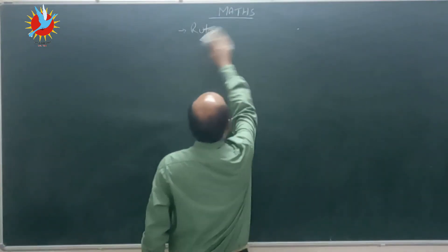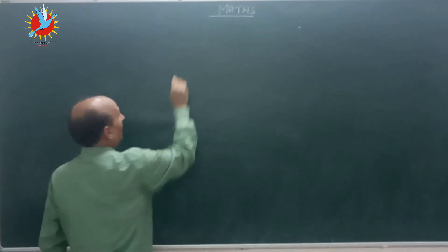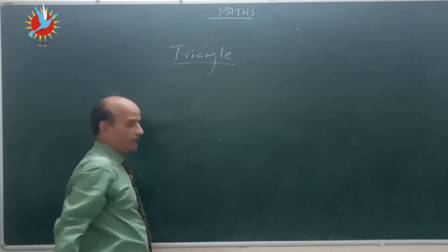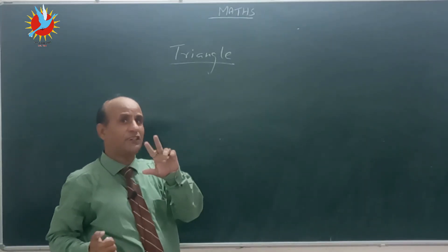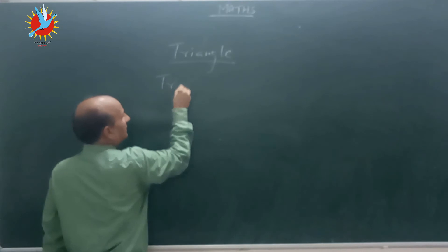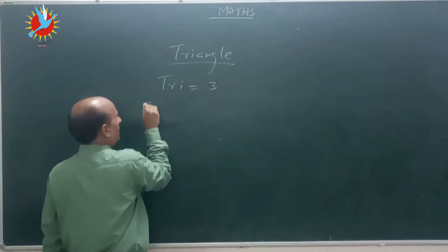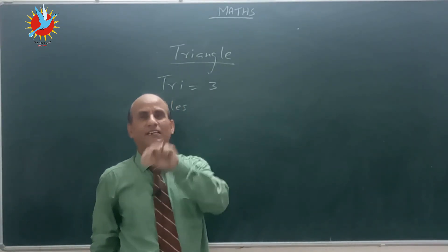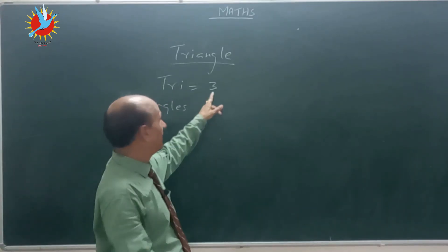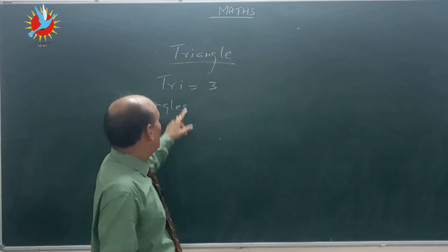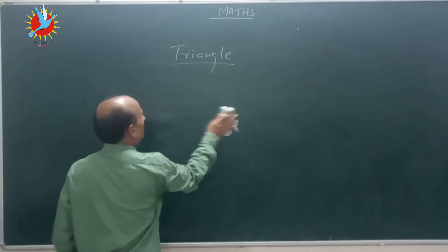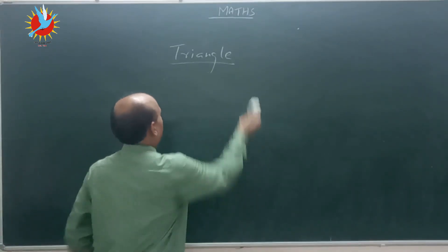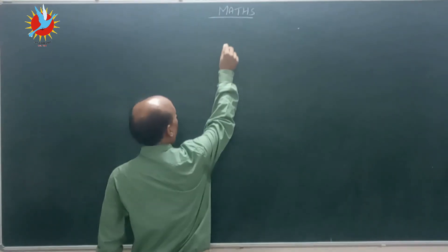Now let us take one new property of a triangle. The word 'triangle' is a combination of two words: 'tri,' which is a Greek word meaning three, and 'angle.' So a triangle is a figure which has three angles, three sides, and three vertices.